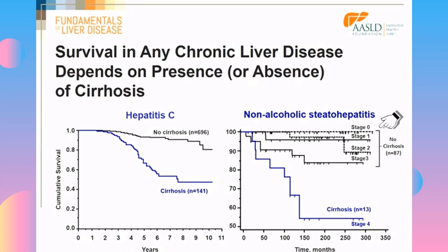The first four stages in blue are non-cirrhotic stages, and the survival is much better. But once the patient develops cirrhosis, you can see how the survival goes down. So when you see a patient with chronic liver disease, the main question in your mind should be: does this patient have cirrhosis or not?